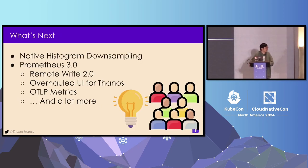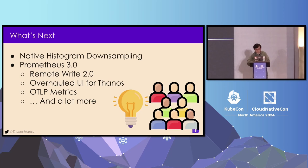For the next steps of the Thanos project, we still need to finish native histogram support — the only thing left is downsampling support for native histograms, and we're looking for a contributor. The next big thing is Prometheus 3.0, which released yesterday. It's time for ecosystem projects like Thanos to catch up and be more compatible. We need to work on Remote Write 2.0, we want an overhauled UI for Thanos like what Prometheus 3.0 does, and we also want to embrace the OpenTelemetry ecosystem to support OTLP metrics.